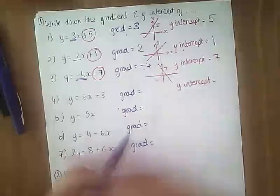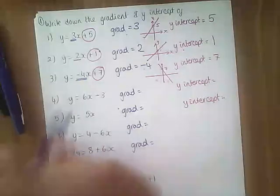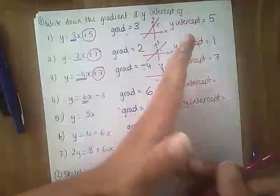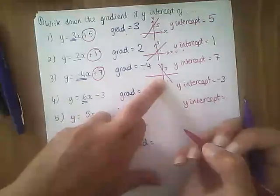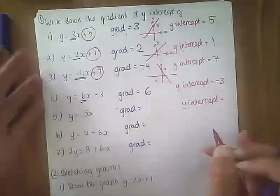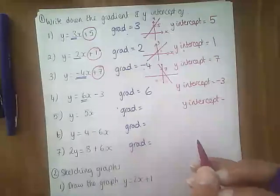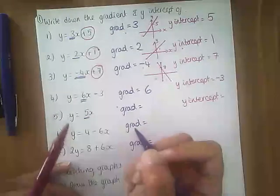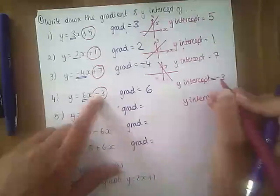Number 4 has a gradient of 6 — the number in front of x — so that's going to be the steepest line we've had so far. The y-intercept is minus 3, so that's going to mean it's crossing down here somewhere. When I say it's really steep, it's relative to the other lines — obviously you can have a gradient of 24, that's just going to be very, very steep. Be careful that that's minus 3 — make sure you take the sign in front of it, it's important too.